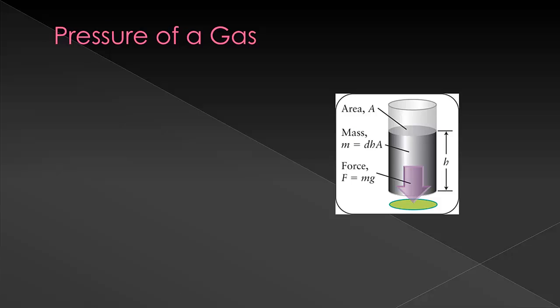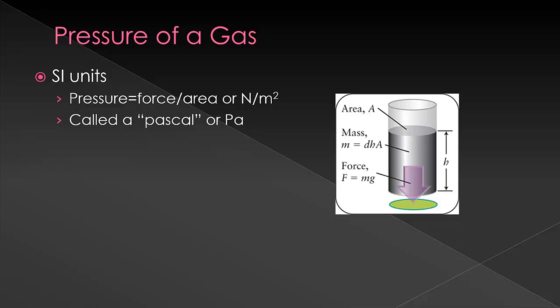So there's a couple of things we need to define. First of all, pressure. The SI units for pressure is going to be force over a given area. Since force is in newtons and area is in meters squared, our unit here is newtons over meters squared. This is called a pascal, and it's abbreviated Pa.